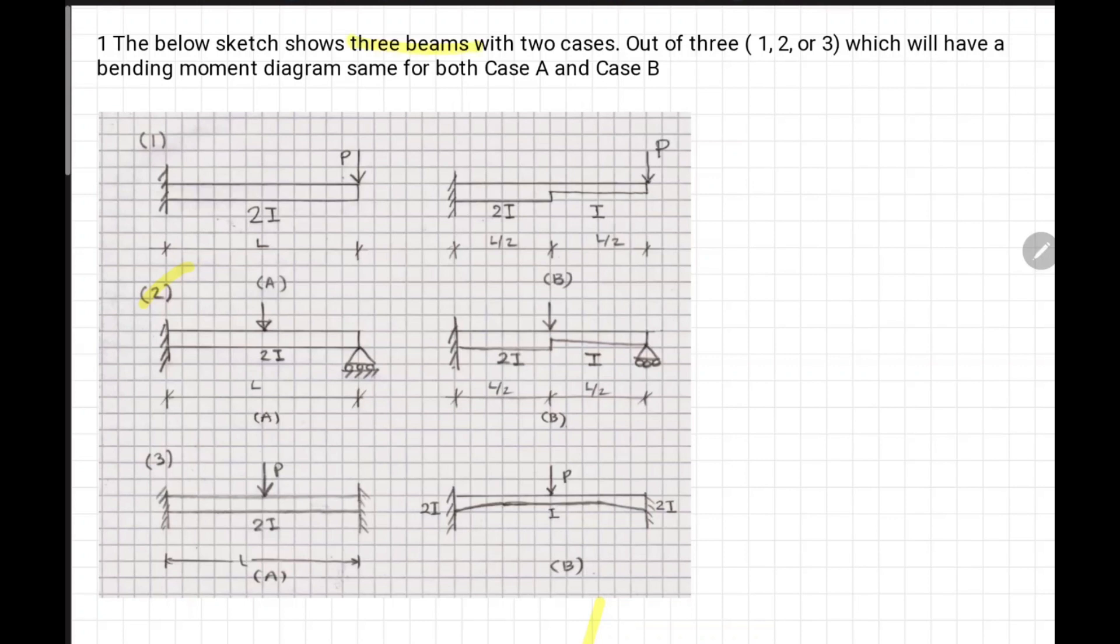Three beams with two cases A and B, out of these three cases 1, 2, 3, which will have a bending moment diagram same for both case A and case B? This question checks the concept about determinate and indeterminate structures. For determinate structures, we can find reactions using three equilibrium equations: summation force equals zero, summation moment equals zero.